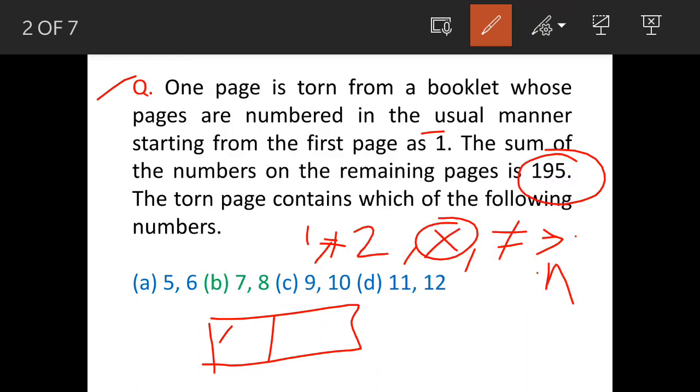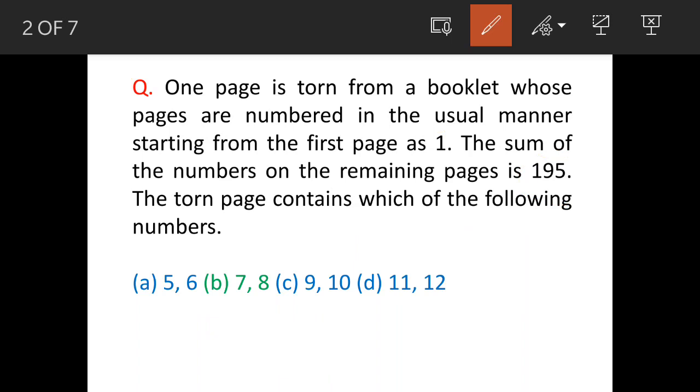Options are given and option B, seven and eight is the answer. Now, the torn page will have two numbers, one in front and one will be on the back side. So that is why these numbers are in pairs. So, now we will see the solution.